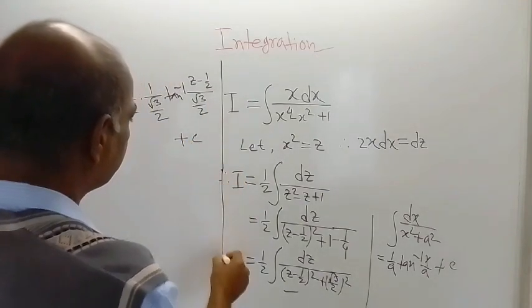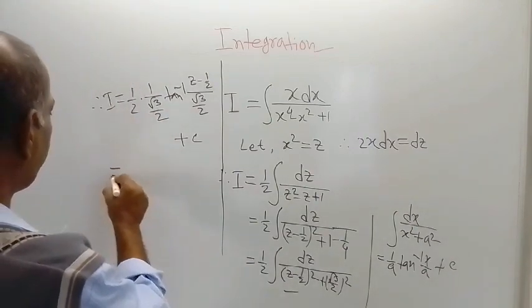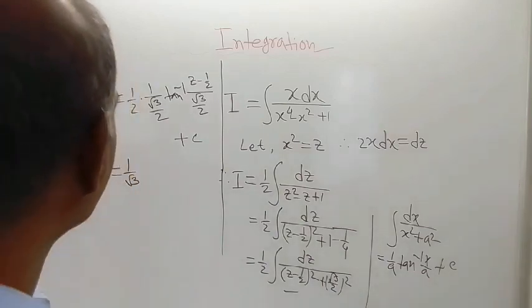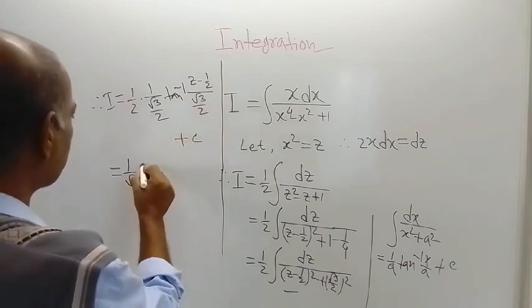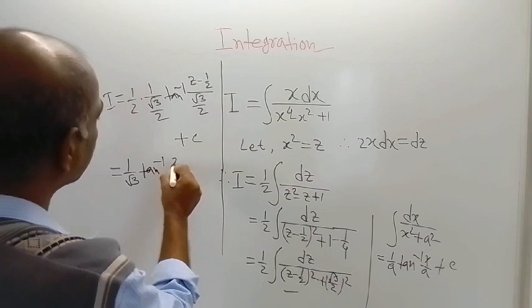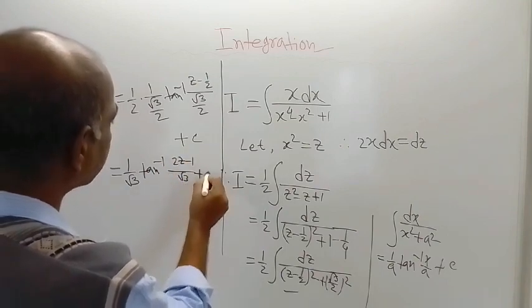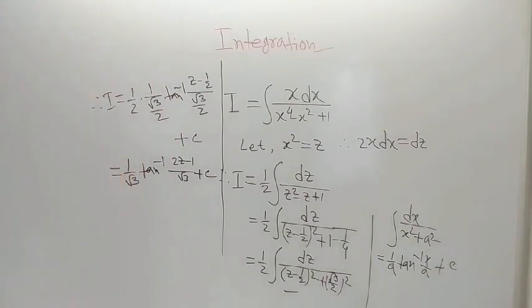And these two and these two are cancelled. Therefore, 1 by root 3 is left. And then we are getting tan inverse 2z minus 1 divided by root 3 plus c.